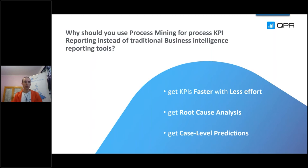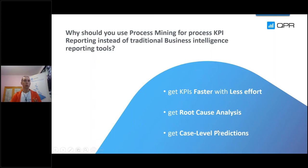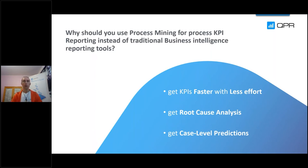Traditional BI tools don't give you root cause analysis automatically — they don't have that kind of functionality. But with process mining you get it. Third: you get case-level predictions. It requires a little bit of work in the process mining area, but because you have access to the root cause analysis, you get it with just configuration. With BI tools, if you want case-level predictions you need data scientists and data warehouses. But with process mining you get all this for the process KPIs.